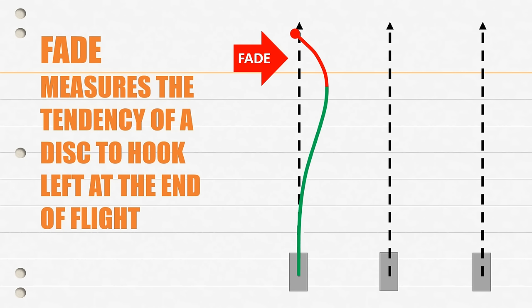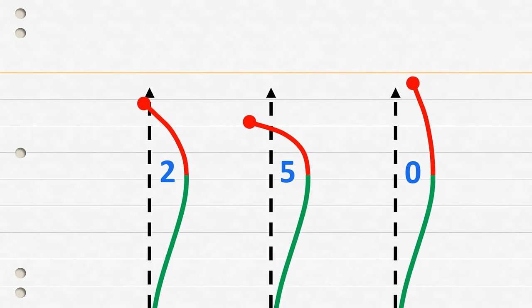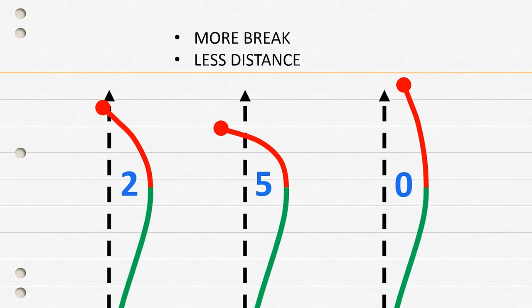To put things in scale, if this first flight pattern was a two-fade disc, a high five-fade disc would look something like this, and a very low-fade disc like a zero would look more like this. So as you compare the three, you can see that a high fade disc is going to have more break at the end of flight, giving you less distance, and a low fade disc is going to have a straighter ending, ultimately giving you more distance.